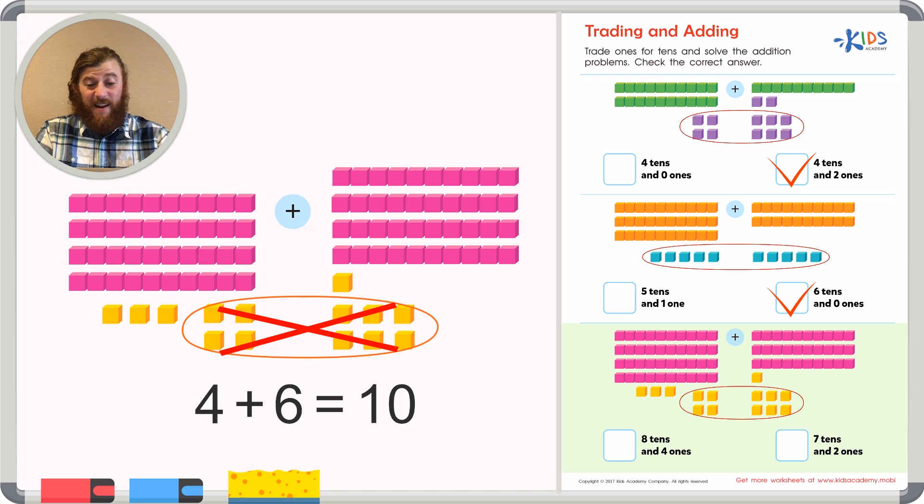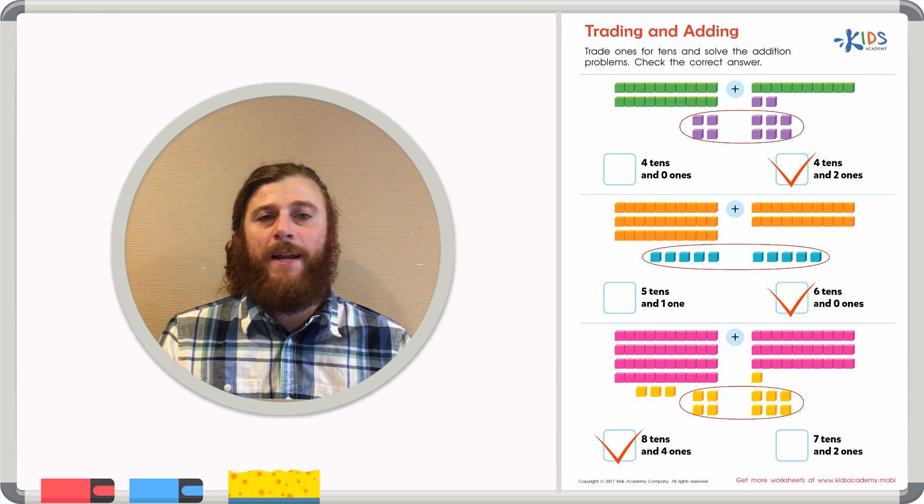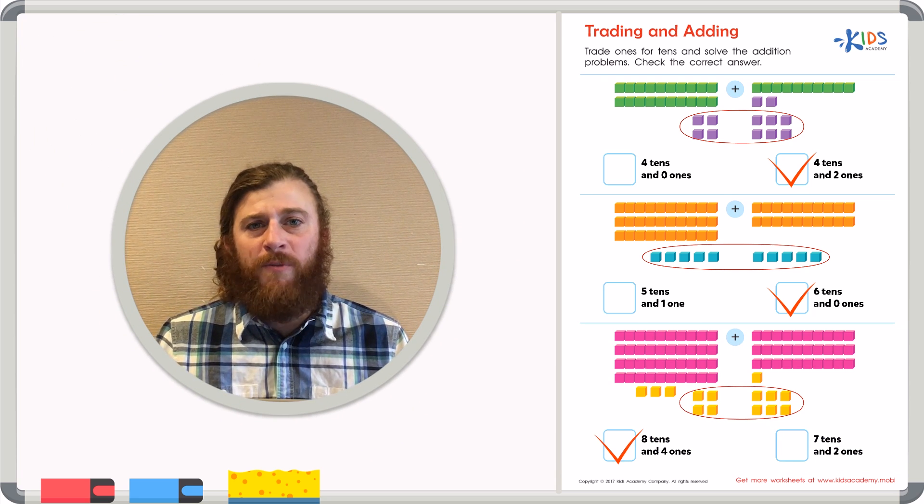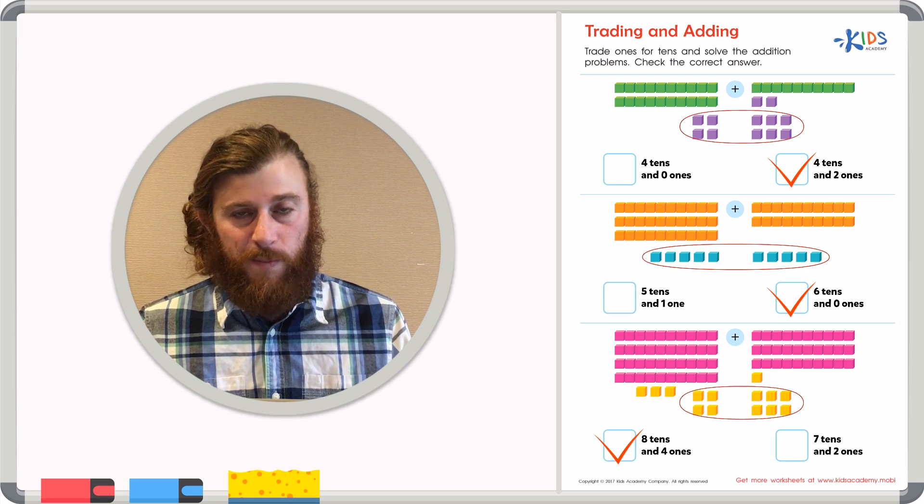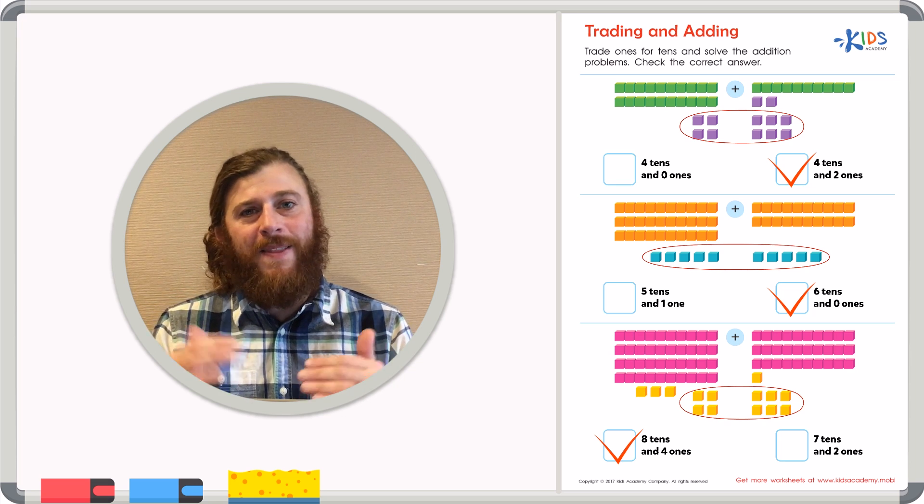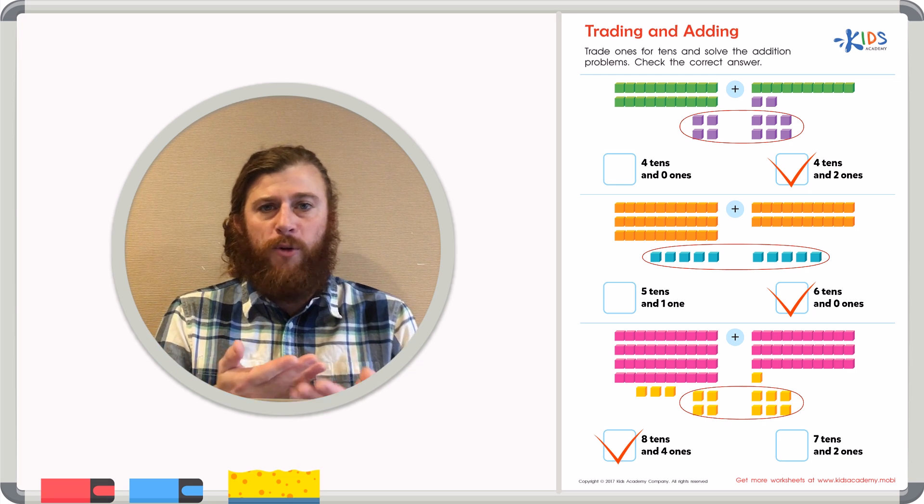Remember boys and girls, if you're adding base ten blocks and you see that you have more than ten ones or exactly ten cubes, you can combine these cubes and trade them for one long, because one long just represents 10 individual cubes.